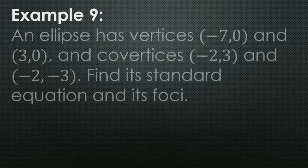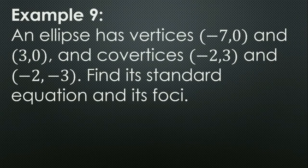Example 9: An ellipse has vertices (−7, 0) and (3, 0), and co-vertices (−2, 3) and (−2, −3). Find its standard equation and foci.